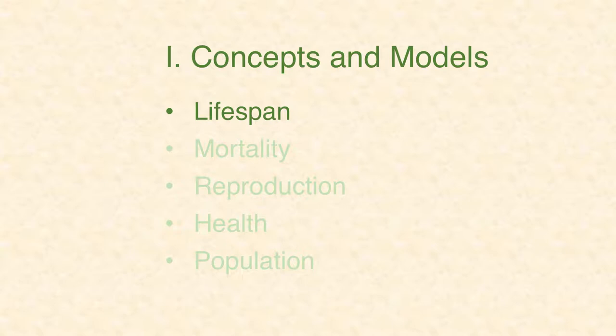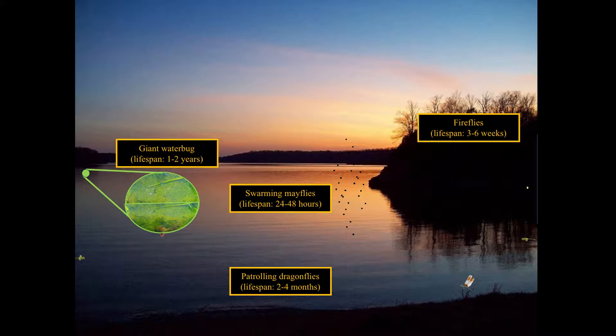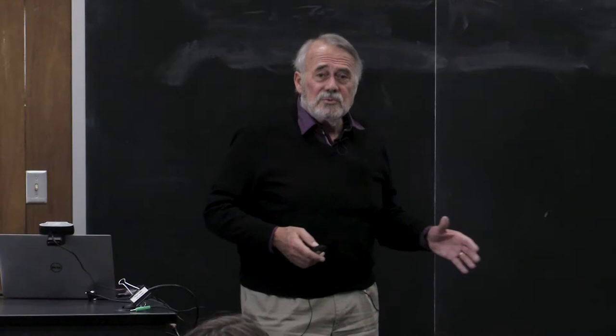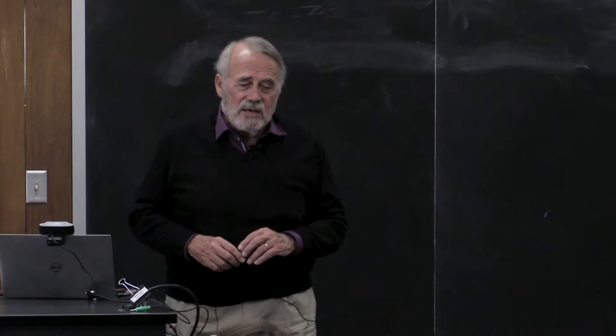This looks like a Minnesota or Wisconsin northern lake. Every one of these organisms has a lifespan. You'd have patrolling dragonflies that live two to four months, swarming mayflies — some of the shortest-lived animals — lasting only 24 to 48 hours as adults, a giant water bug living one or two years, and fireflies maybe three to four weeks.